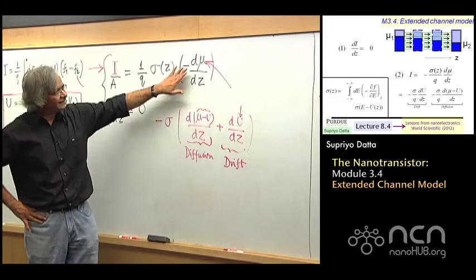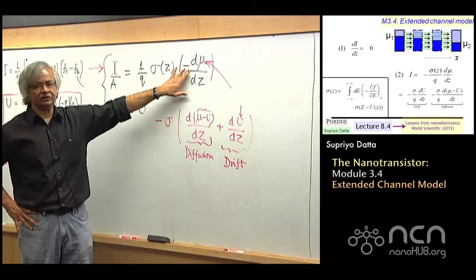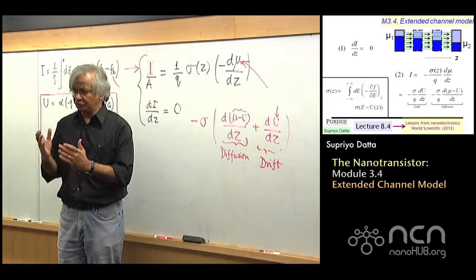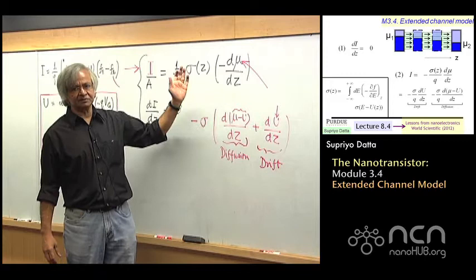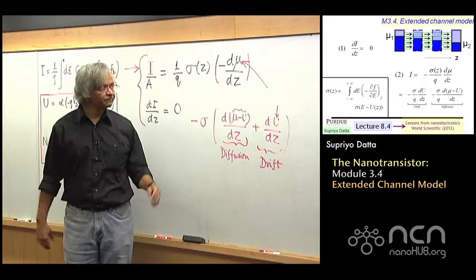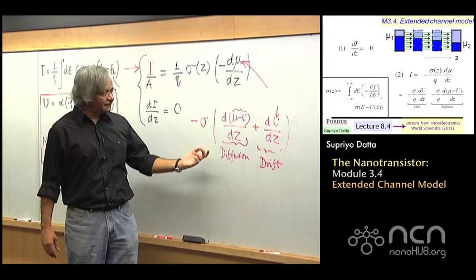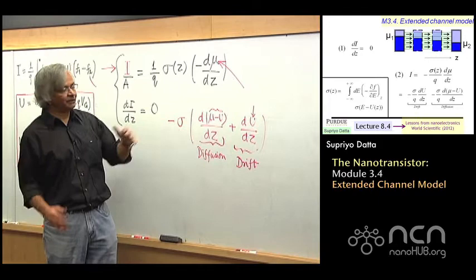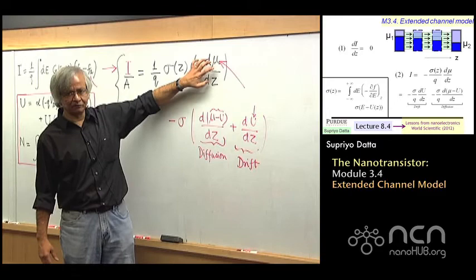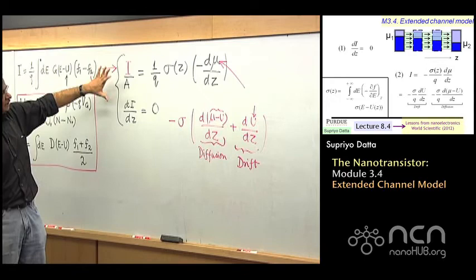But the point I want to stress is that this is really more fundamental in the sense that current really depends on the slope of the electrochemical potential. So if you are analyzing complicated things where the density of states varies spatially or the effective mass is changing spatially — going from one medium to another — the relation that is fundamental is that the current depends on the slope of the electrochemical potential, just as heat flow is determined by the slope of temperature. This division into drift and diffusion is relatively arbitrary.